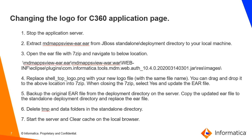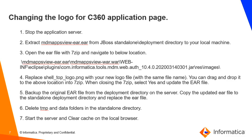Backup the original file from the deployments directory on the server. Copy the updated EAR file to the standalone deployments directory and replace the EAR file. Delete the temp and data folders in the standalone directory. Start the application server, clear the browser cache, and log in to the C360 application. You will be able to see the new logo in the top left corner.